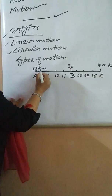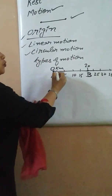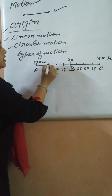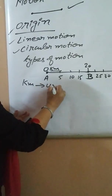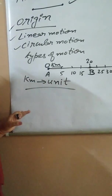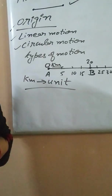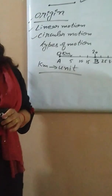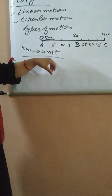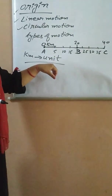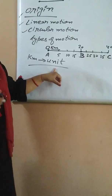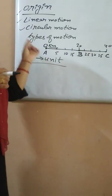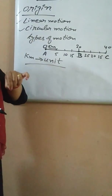As you can see, I have written the word kilometer. So what do we call these kilometers? This kilometer is known as a unit. This unit specifies the physical quantity, which we will come to know about.